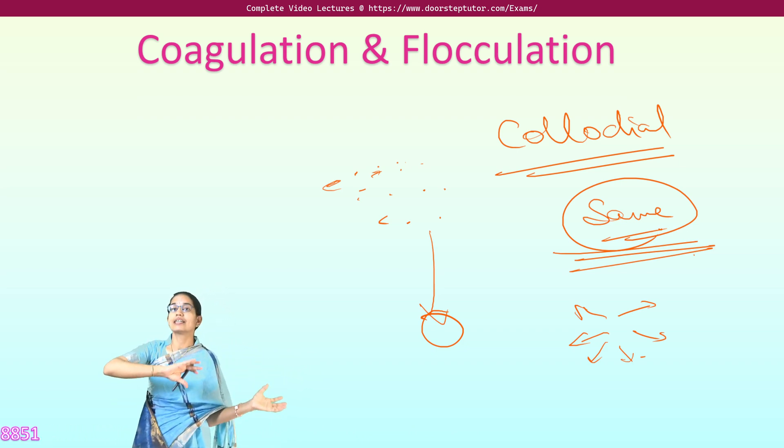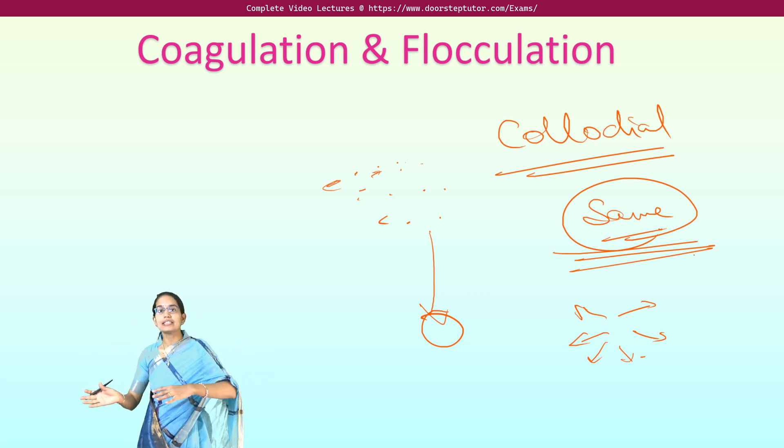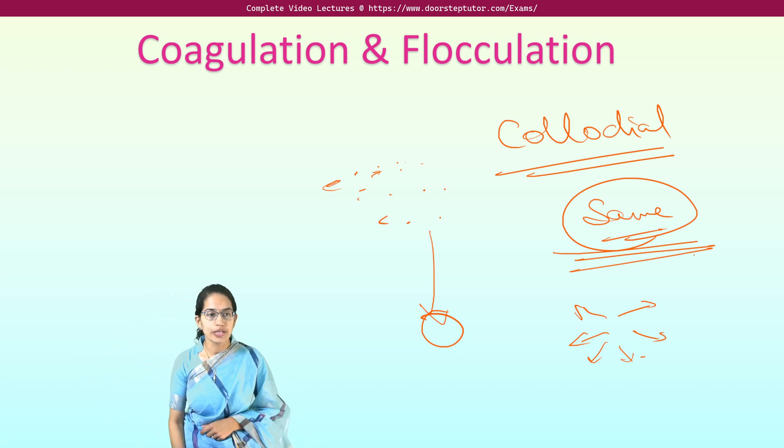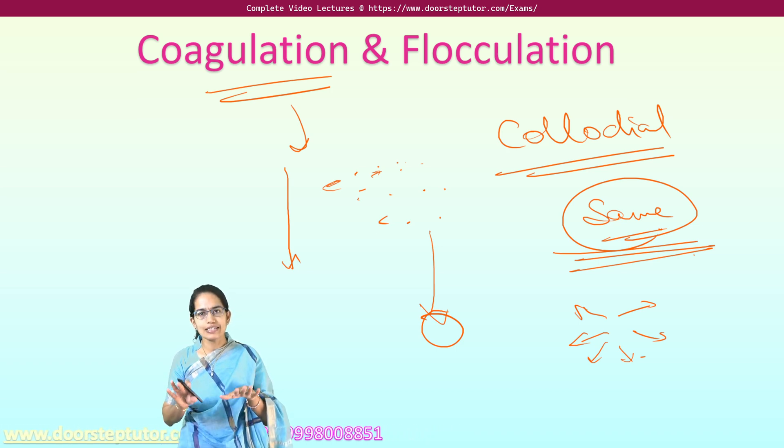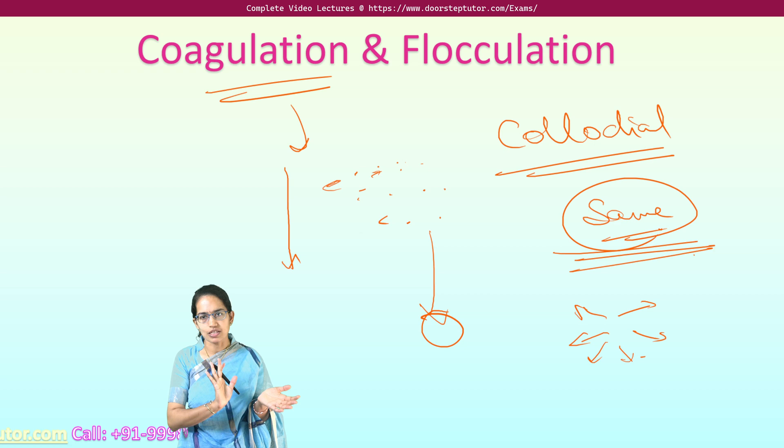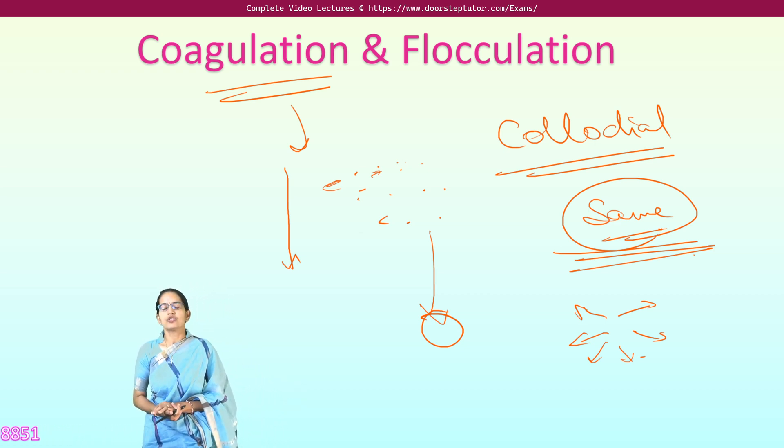Chemicals called coagulants are added to help these small particles agglomerate and come together. The charges are neutralized and finally, due to gravity, they either settle down or float on the surface.